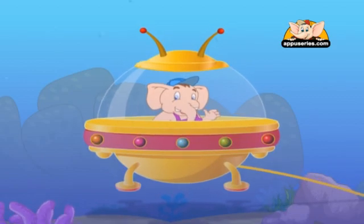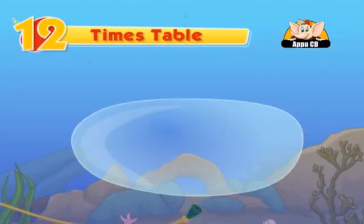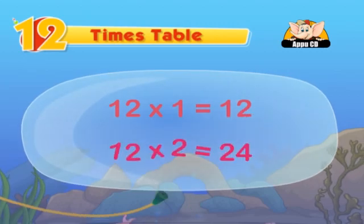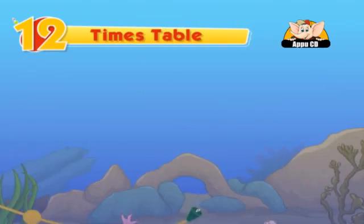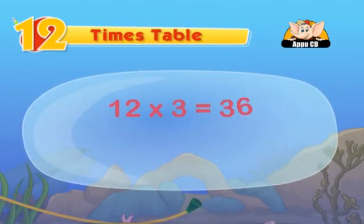You will then never get mixed up. 12 ones are 12, 12 twos are 24, 12 threes are 36, 12 fours are 48.